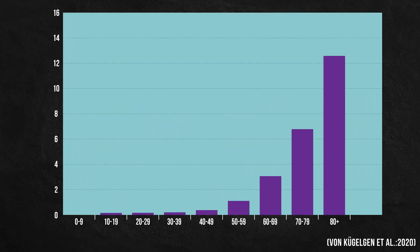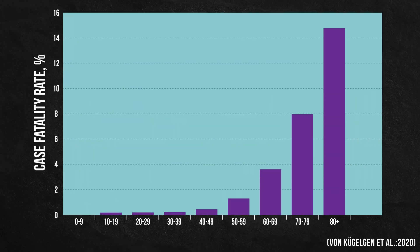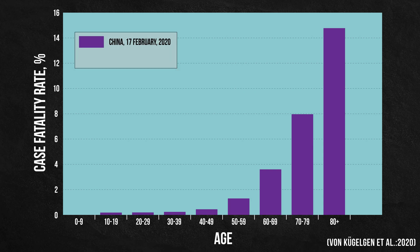This is a snapshot of the COVID-19 case fatality rates by age group in China, reported on February 17, 2020. The larger bars on the right reflect the fact that the elderly generally have a higher risk of death when contracting COVID-19.